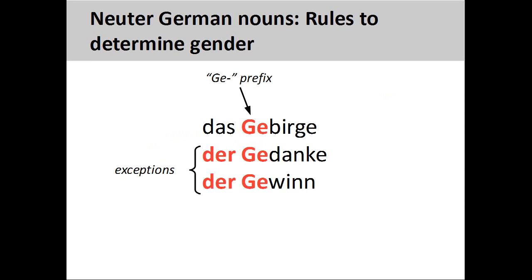Many collective nouns with a 'ge-' prefix, such as 'Gebirge' (group of mountains or mountain range), are neuter. A collective noun is a collection of things taken as a whole. There are, however, many other nouns such as 'Gedanke' (thought) and 'Gewinn' (profit) that are not neuter.